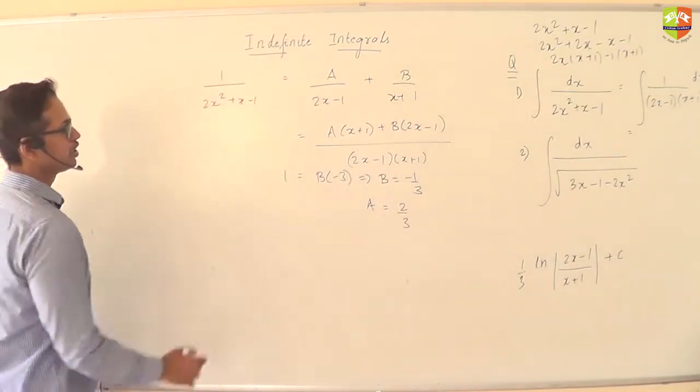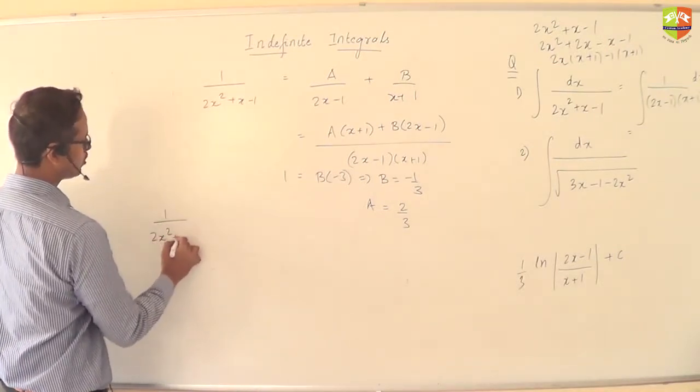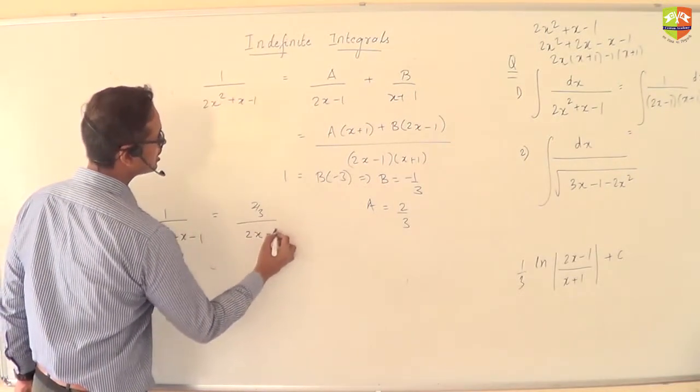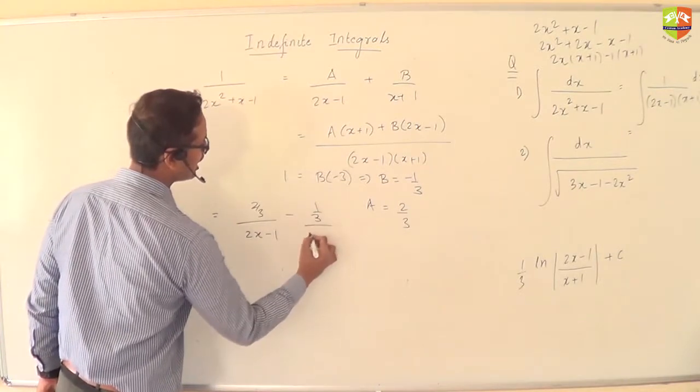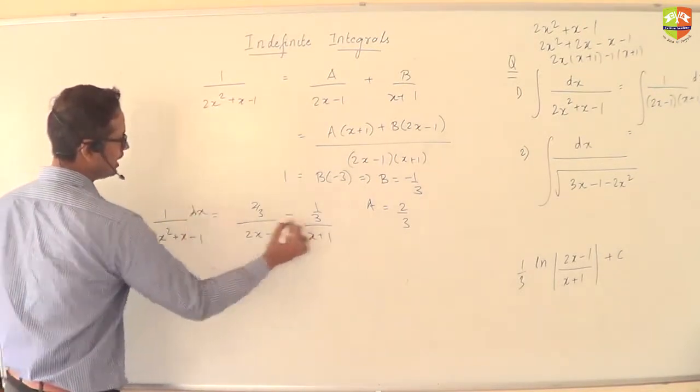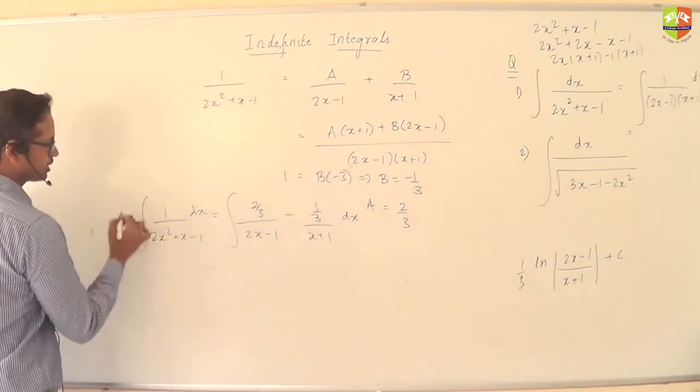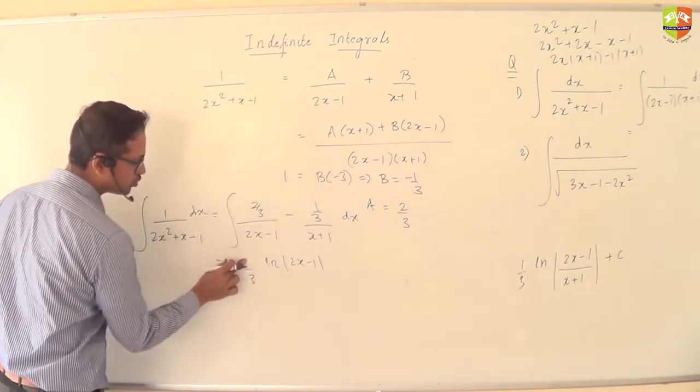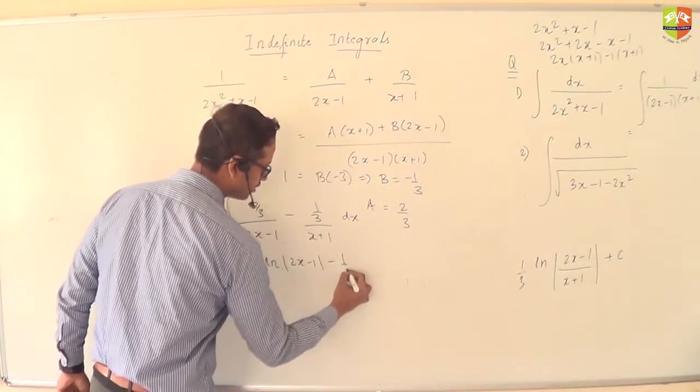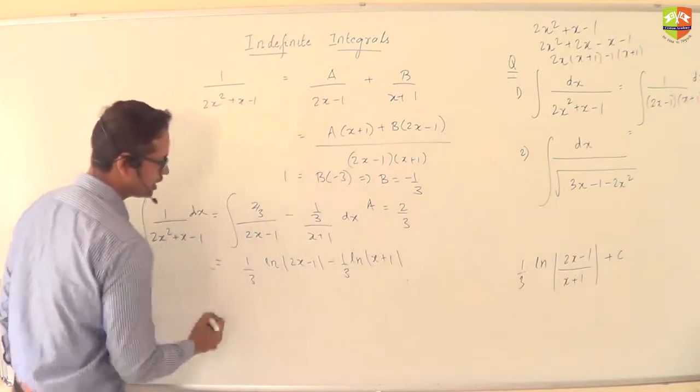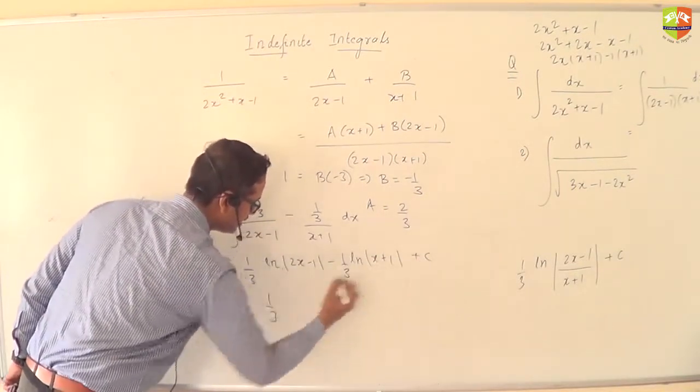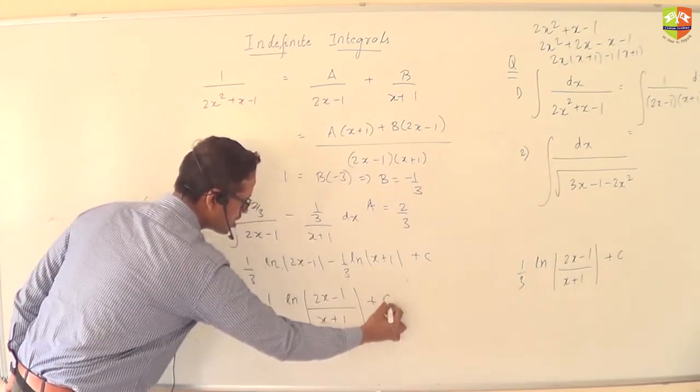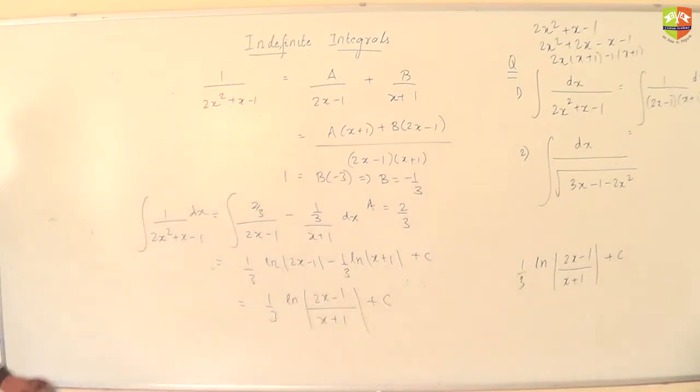So, 1 by 2x square plus x minus 1 could be written as 2 by 3, 2x minus 1, minus 1 by 3, x plus 1. Apply dx, integrate both sides. So this will be 2 by 3 ln mod 2x minus 1 by 2. So this 2 will go off. And this will be minus 1 by 3 ln mod x plus 1. If I take 1 by 3 common, I will have ln. Exactly the same result, approach is different.